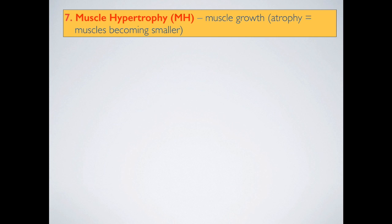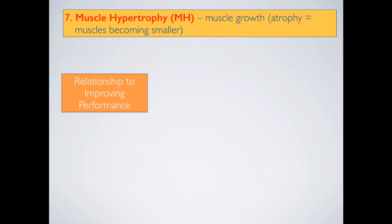Hypertrophy is the opposite of atrophy, which means that muscles become smaller as a result of not training. In relation to improving performance, muscle hypertrophy occurs when both the muscle fibre size and the connective tissue between the fibres increase as a result of resistance training. This enables the muscle to generate more force and more power.